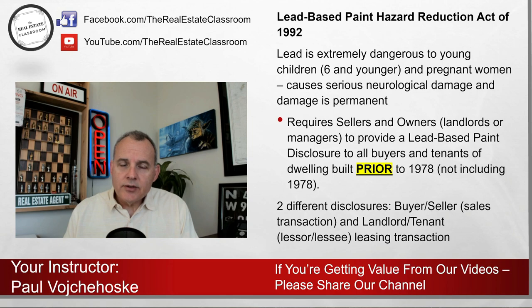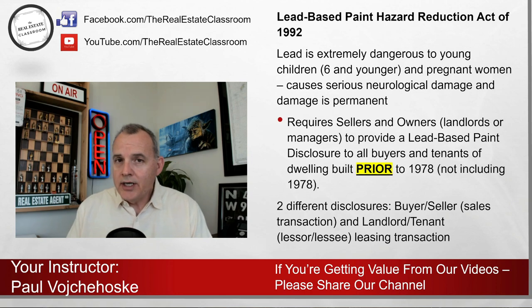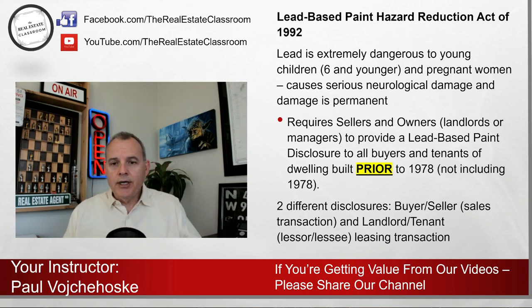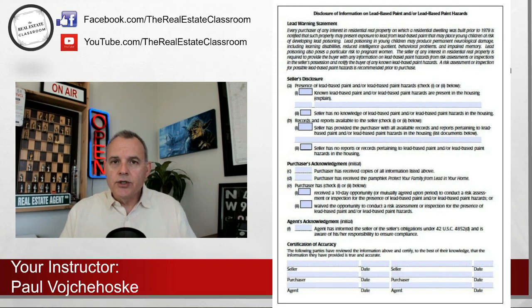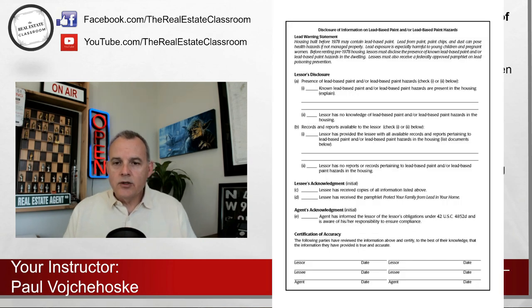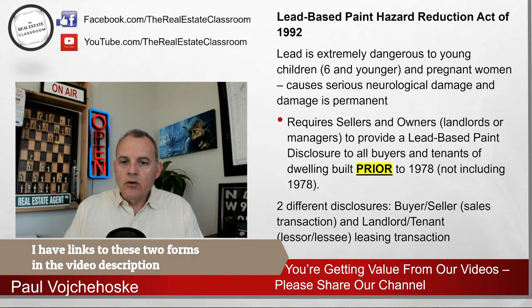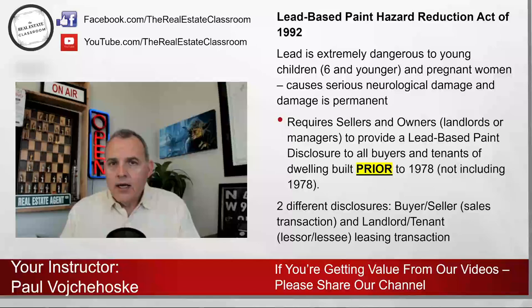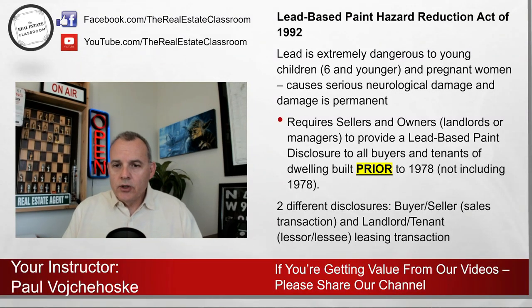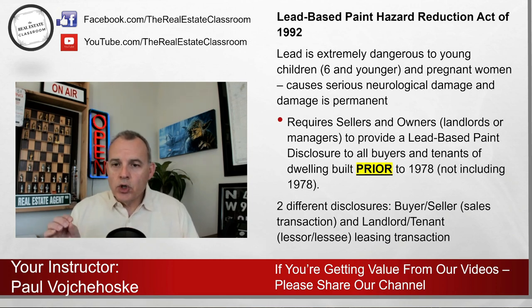There are two different lead-based paint disclosures you have to be familiar with to ensure you're using the correct one depending on the transaction. The first disclosure is used for sales transactions. The second is used for leasing activities — it says lessor and lessee. In real estate, the lessor is the landlord and the lessee is the tenant. The EPA felt two different disclosures were required, so once licensed, you must use the correct disclosure for the relevant transaction.